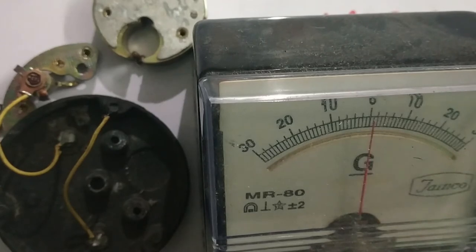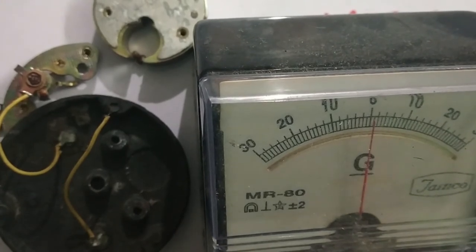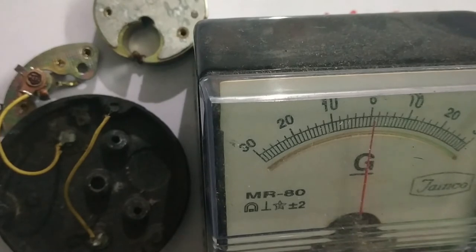Galvanometer cannot be used directly in the circuit to measure high currents because it is a very sensitive instrument. We can convert this galvanometer into a voltmeter and we can convert this galvanometer into an ammeter.